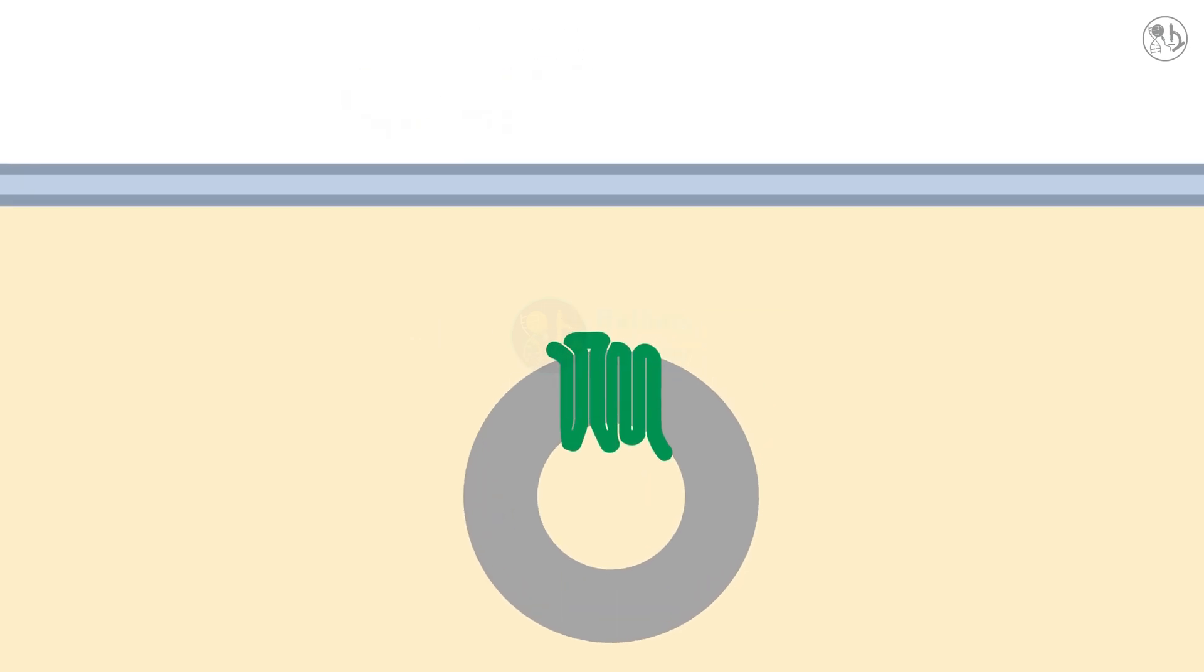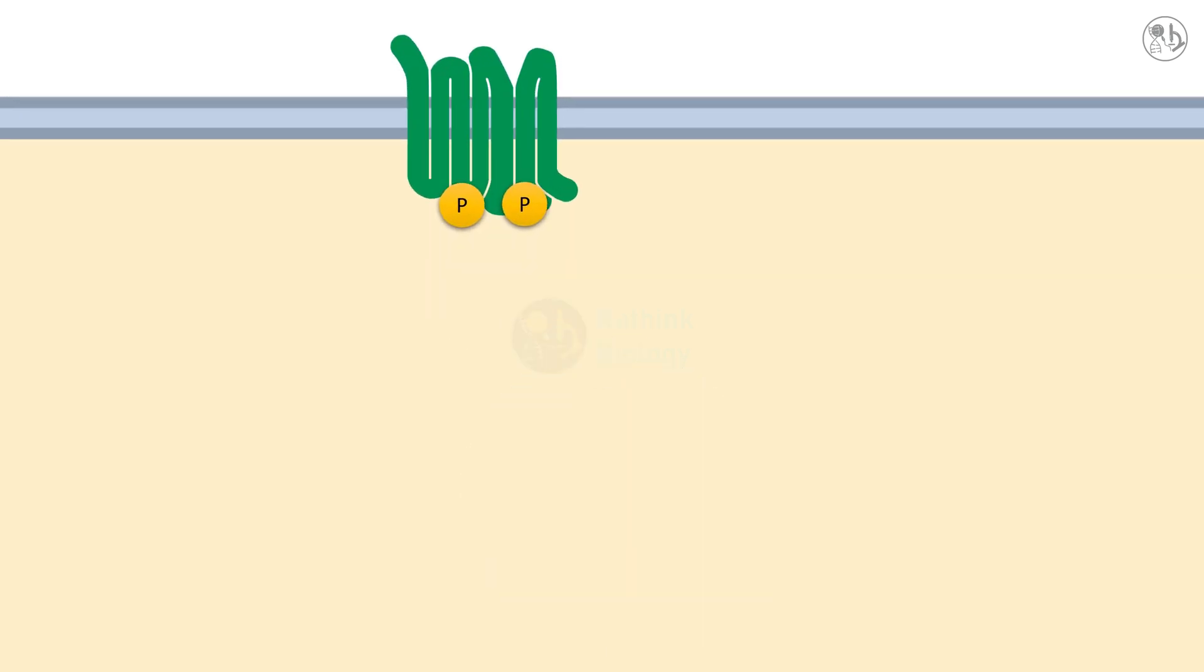Smoothened is phosphorylated by PKA and CK1 and translocates to the plasma membrane where it recruits the complex containing fused, costal-2, and Ci.